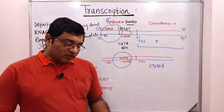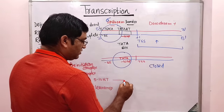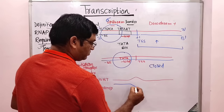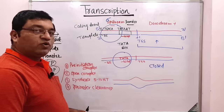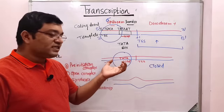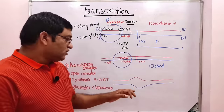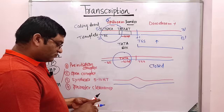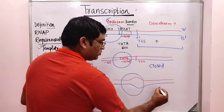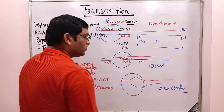As the RNA polymerase binds with the TATA box promoter element, local opening of the strand occurs in the region of the TATA box — because of RNA polymerase. This is known as open complex formation.